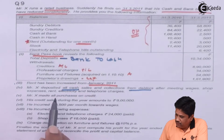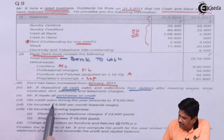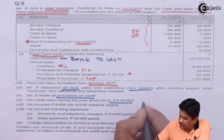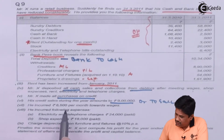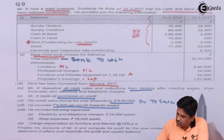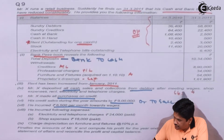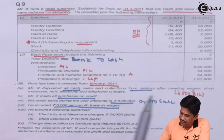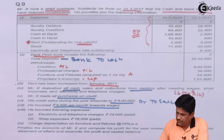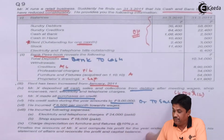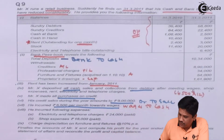His credit sales during the year amounted to 9 lakhs — they have very clearly given the credit sales figure. The entry will be debtors to sales; sales will be credited to your trading account. He incurred 6500 per month towards wages, so I am noting it down. 6500 for 12 months must be considered in my P&L account, subject to any outstanding provided. The entry for wages will be wages account debit to cash.